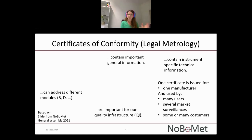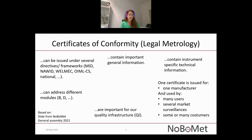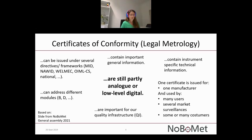Certificates of conformity can address different modules — NOBOMED deals with different conformity assessment modules such as B, D, and F — and they can be issued under several directive frameworks, including the Measuring Instruments Directive, the Non-Automatic Weighing Instruments Directive, OIML CS certificates, MLCS certificates, or national certificates. This very important piece of information is still partly analog or low-level digital. It would make sense to have a more machine-readable document here than just a PDF file.